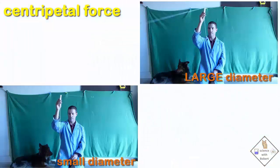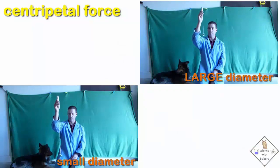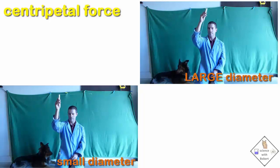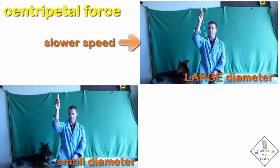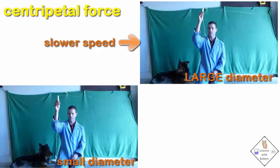Notice when the single washer being swung in a circle has a large circular path, in other words, the diameter of the circle is large, the single washer only needs to move at a slower speed to achieve a centripetal force equal to the weight of the 10 washers.